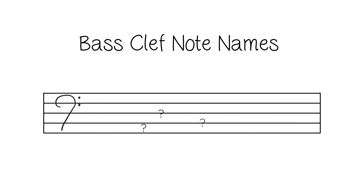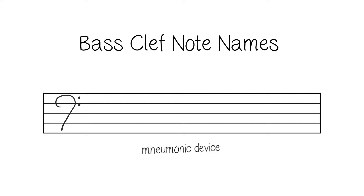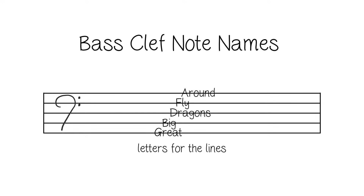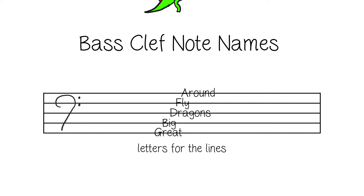When first learning which letters go where, it's good to use a mnemonic device. To remember the letters for the lines, we're going to use "Great big dragons fly around." When we take the first letter of each word, we get G, B, D, F, A.